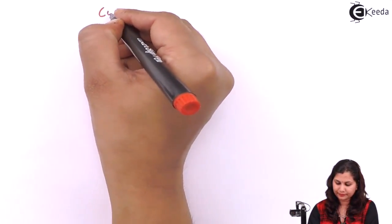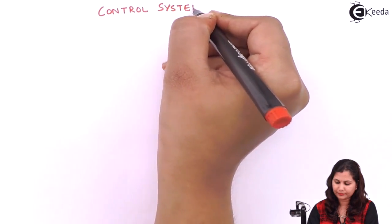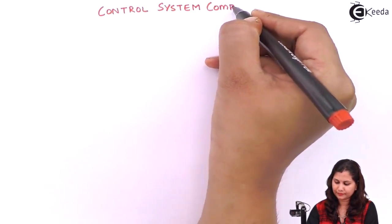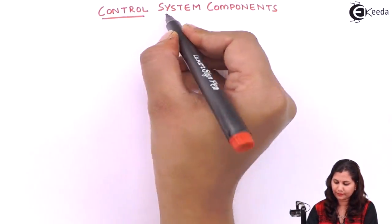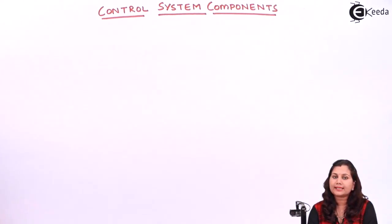Hello friends, in this video we are going to study about the control system components. Before starting with the control system components, let us consider a block diagram of a closed-loop control system.